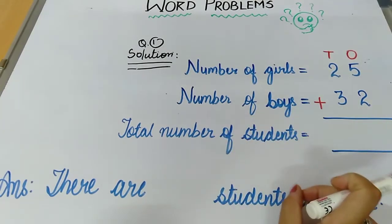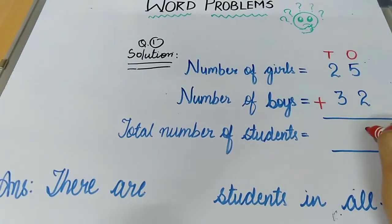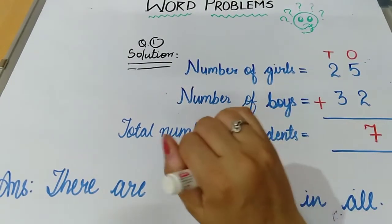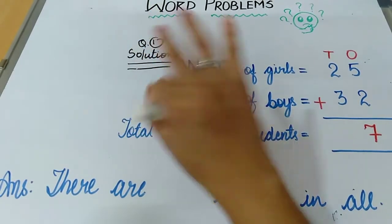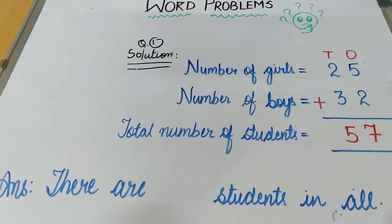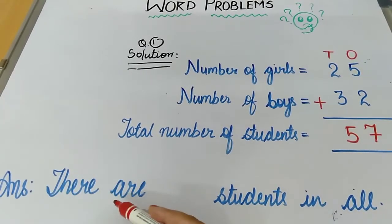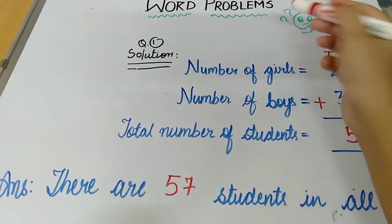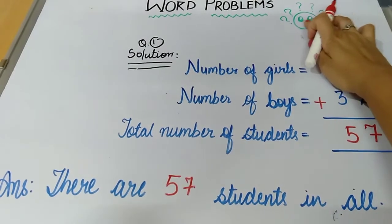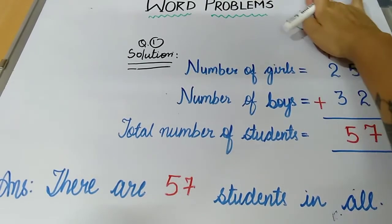Five plus two: after five — six, seven. So you write 7 in the ones place. Two plus three: count — three, four, five. So you write 57. Total number of students is 57. Your ending statement will be: there are 57 students in all. In this way you can solve word problems. Rohan is very happy and all the questions are answered.